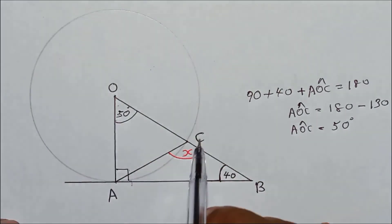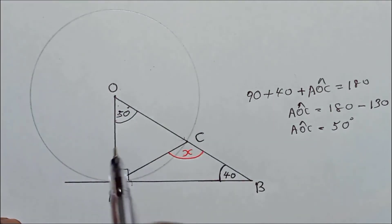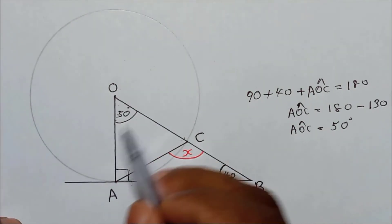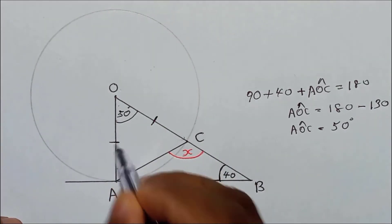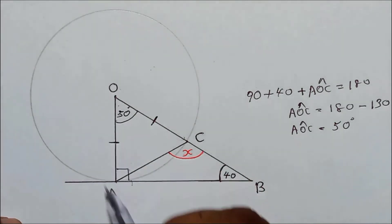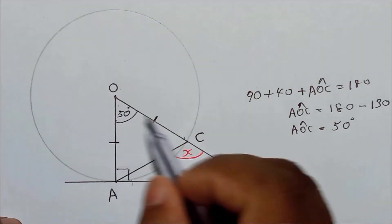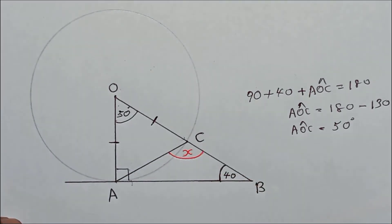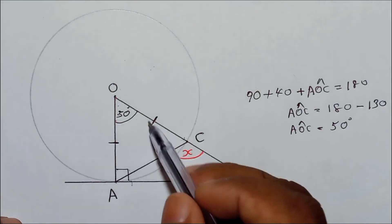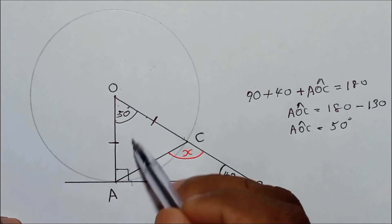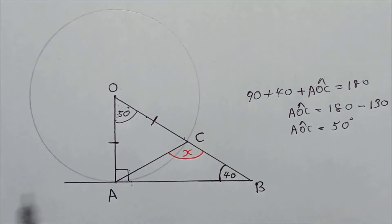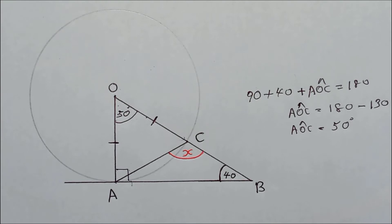Now OC and OA are both radii of the same circle, right? That means these two are equal. So I can mark OC equal to OA. Now triangle OAC is an isosceles triangle. In an isosceles triangle, the opposite angles of the equal sides are equal.